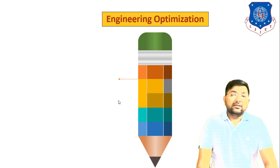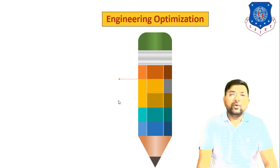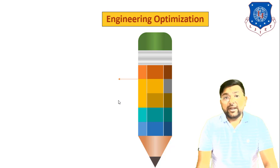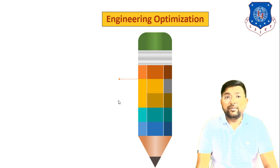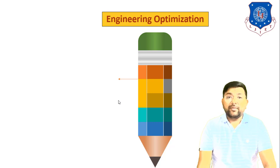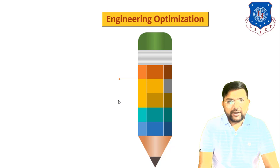We also discussed some theory based on optimization — how to design a component using adequate design and how to design a component using optimal design. We also discussed a few parameters like Functional Requirement Parameter, Material Parameter, and Geometric Parameter.